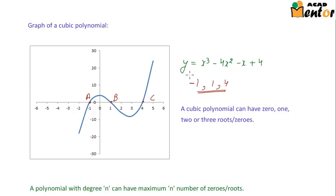Just like a quadratic polynomial, which can have 0, 1, or 2 roots, a cubic polynomial can have 0, 1, 2, or 3 roots. At maximum, it can have only 3 roots.